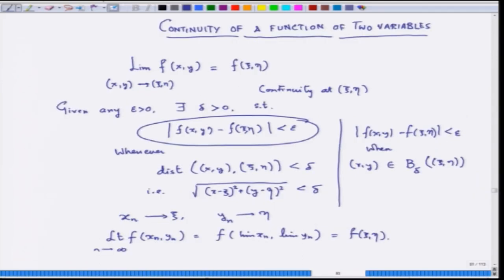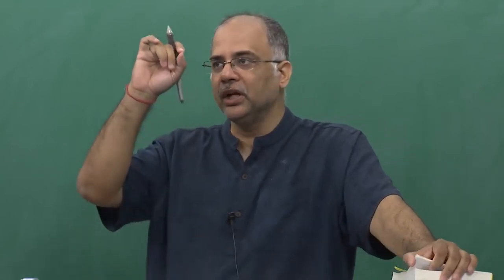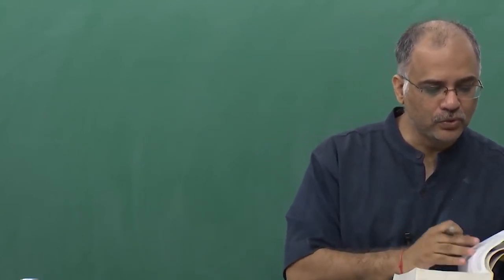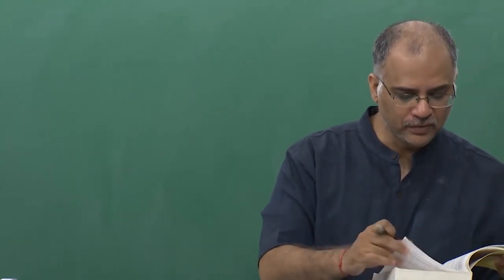Once we have done this, it is important to know how to detect continuity of a function of two variables. Functions of two variables can behave strangely: a function can be such that if you fix y and make it a constant, it is continuous in x; if you fix x, it is continuous in y — but it may not be continuous as a function of (x,y). Also, unlike single-variable functions where discontinuities are at isolated points, here the function can be discontinuous along a whole curve.